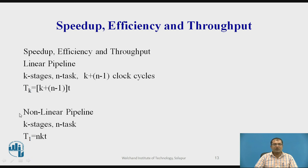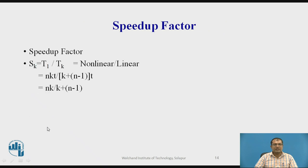Similarly in case of non-linear pipeline, so k number of stages performs the task and if there are n number of tasks, so it will be total nk into t will be your time taken to complete all the instructions. So the ratio of this t1 and tk, that is non-linear to linear, gives your speed of factor, which is nk divided by k plus n minus 1.